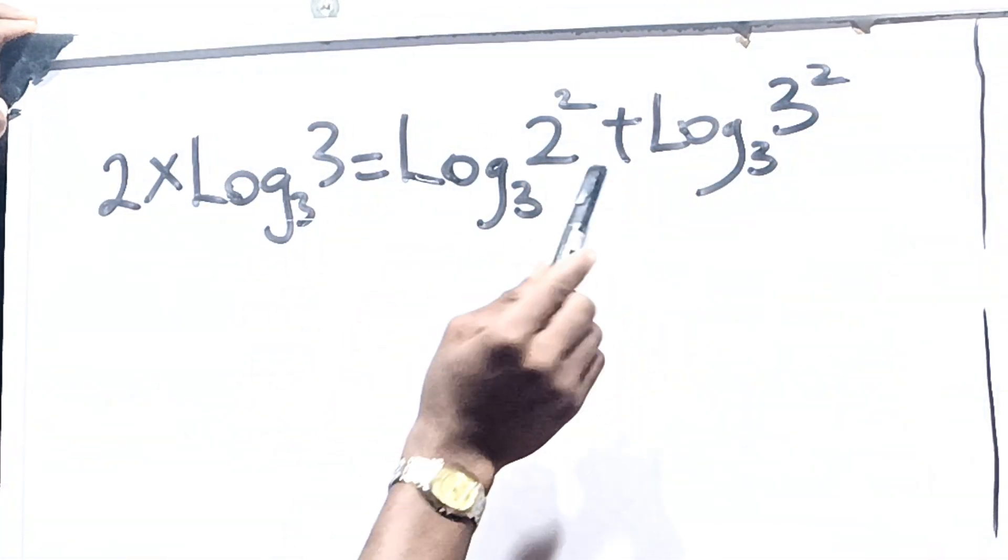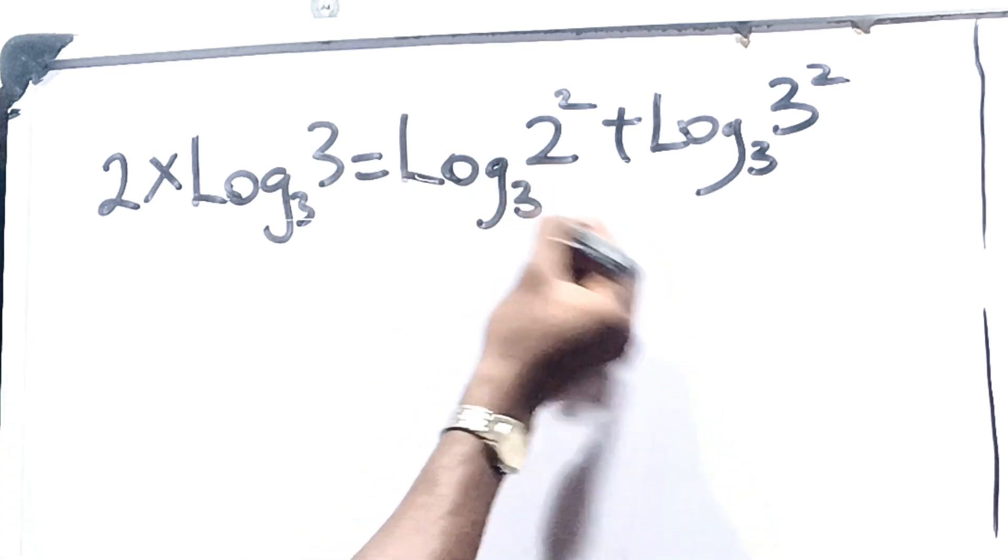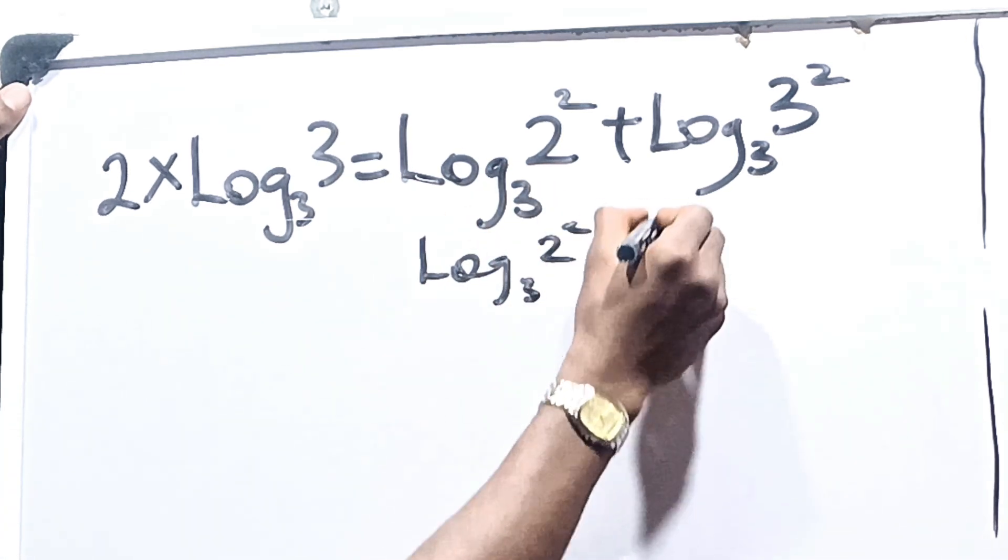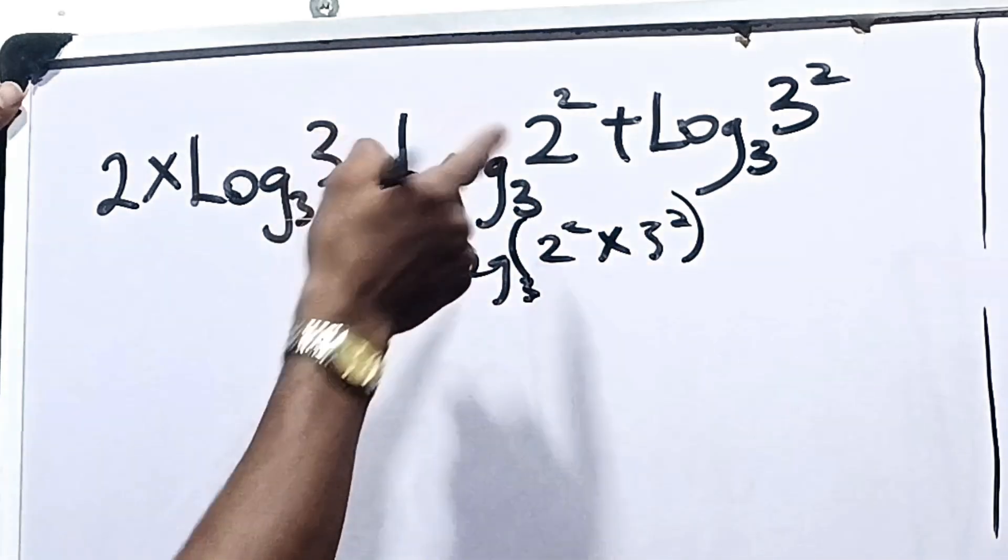So this now can be written as logarithm in base 3 of 2 squared plus logarithm in base 3 of 3 squared. When you open this up, you have this.